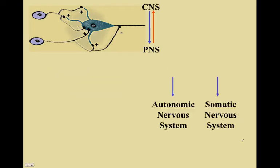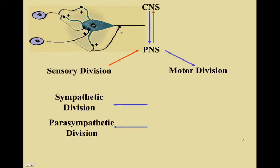Within the autonomic nervous system, we take a look at two divisions: the sympathetic division and the parasympathetic division. The sympathetic division is fight or flight, and the parasympathetic division is rest and digest.